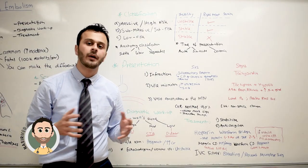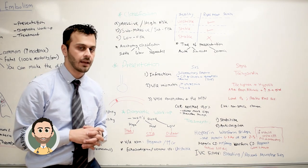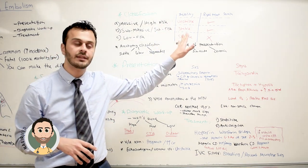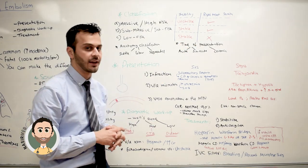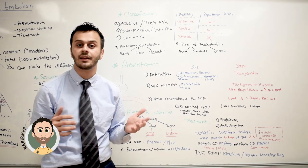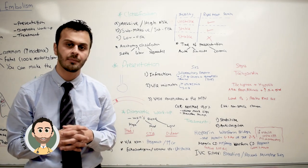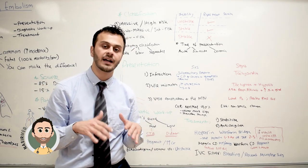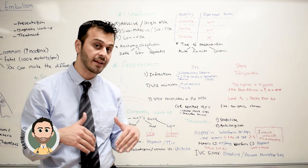There are several ways to classify pulmonary embolism. One is based on hemodynamic stability as well as the presence or absence of right heart strain. When I say hemodynamically unstable, I mean that upon presentation the patient had a systolic blood pressure below 90.